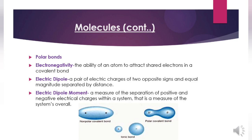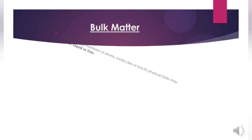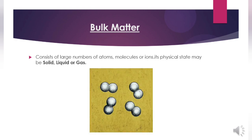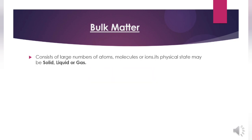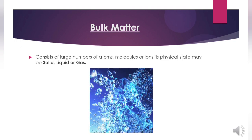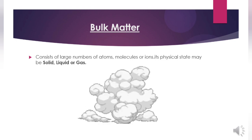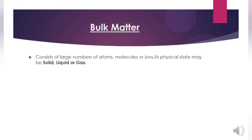Bulk matter consists of large numbers of atoms, molecules, or ions. Its physical state may be solid, liquid, or gas. A solid is a form of matter that adopts and maintains a shape independent of its container. A liquid adopts the shape of the part of the container it occupies and is separated from the unoccupied part by a definite surface. A gas immediately fills any container it occupies. Liquids and solids are condensed states of matter; liquids and gases are fluids.